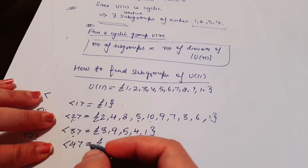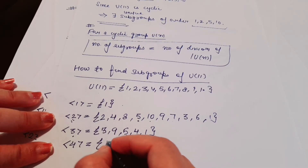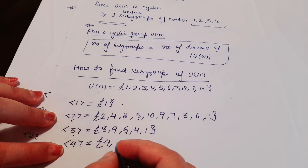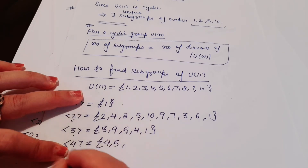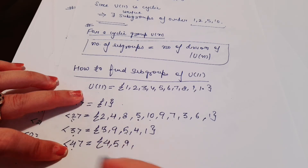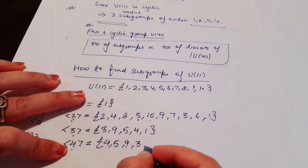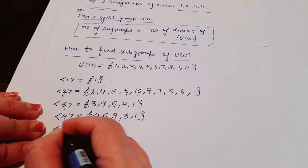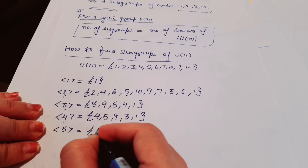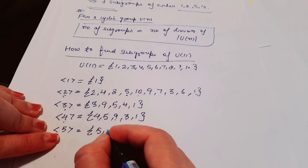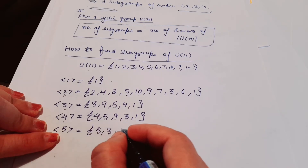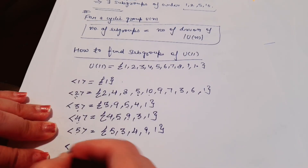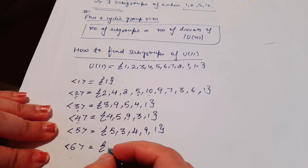For the subgroup generated by 4: 4^1 = 4, 4^2 = 16 → remainder 5, 4^3 = 5×4 = 20 → remainder 9, 4^4 = 9×4 = 36 → remainder 3, 4^5 = 3×4 = 12 → remainder 1. So ⟨4⟩ = {1, 3, 4, 5, 9}. For the subgroup generated by 5: 5^1 = 5, 5^2 = 25 → remainder 3, 5^3 = 3×5 = 15 → remainder 4, 5^4 = 4×5 = 20 → remainder 9, and this also gives the same set.